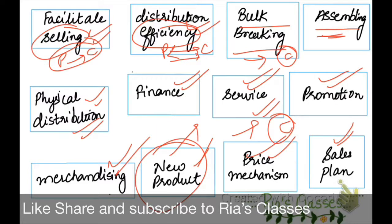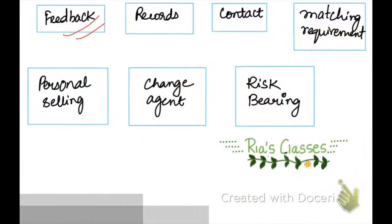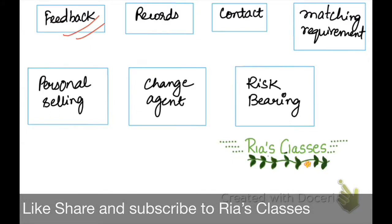The distribution channel also carries out Sales Planning — determining which territory or geographical area to target, setting the target market, and planning how to do sales. This is one of the key functions. Next is Feedback. The channel continuously analyzes the territory and buyer needs. A market intelligence system gathers continuous feedback, and records are maintained properly.